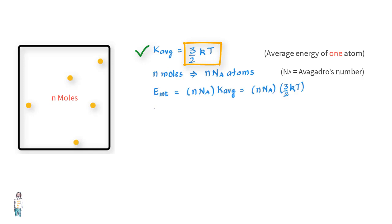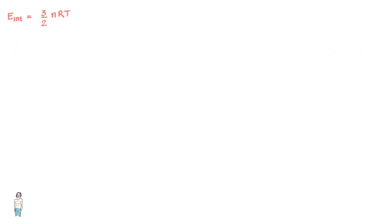If we use the identity k = R/N_A, we can rewrite this equation as E_internal = (3/2)nRT. Again, this is for a monoatomic ideal gas. So once again we see that the internal energy of an ideal gas is a function of the gas temperature only; no other variable has any influence on the internal energy.